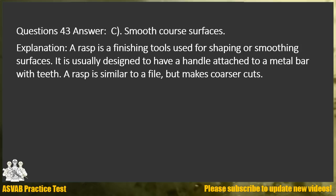Answer C. Smooth coarse surfaces. Explanation: A rasp is a finishing tool used for shaping or smoothing surfaces. It is usually designed to have a handle attached to a metal bar with teeth. A rasp is similar to a file but makes coarser cuts.